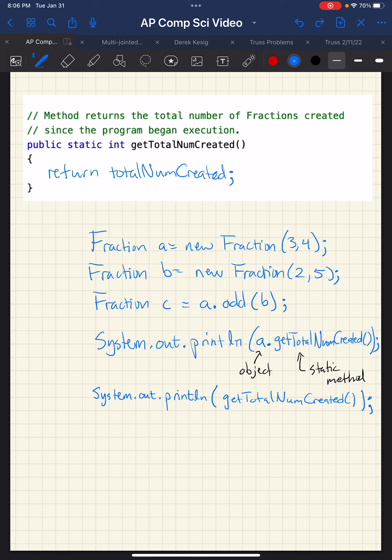In order to call this, it's the class taking the action. So I say fraction dot get total num created, because it's the fraction class that's taking that action. So it's the class that calls static methods.